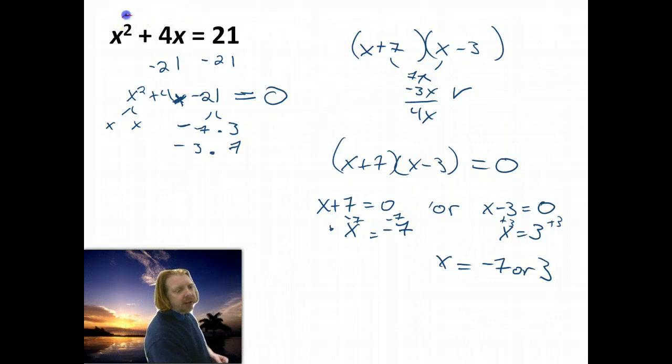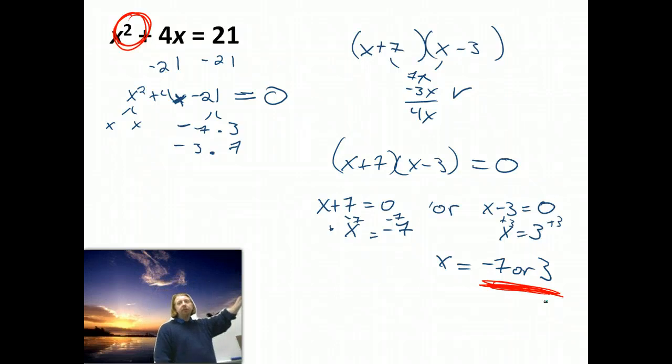This equation back here is a quadratic. The highest exponent is 2. I have two answers. The degree of the equation determines the number of answers you should be looking for. If this had been x to the third, which you'll do in Algebra 2, the exponent on the x, the degree of the equation, because it's a quadratic it's a second degree. That tells me I should have two answers when I'm done.